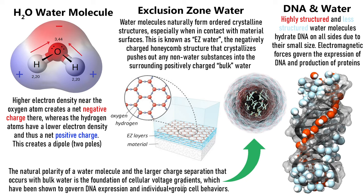Cellular voltage gradients are also going to be determined by ions like calcium, sodium, potassium, and magnesium. Those will influence the larger cellular voltage gradients, and where those ions are — whether they're inside the cell or whether they get pumped out into the surrounding matrix. But this electromagnetic charge separation of water is the foundation of those cellular voltage gradients and forms a lot of cellular behaviors through the action on things like DNA and proteins and more.